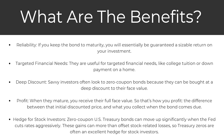So what are the benefits? Starting with reliability — if you keep the bond to maturity, you will essentially be guaranteed a sizable return on your investment. It's also good for targeted financial needs, such as college tuition or a down payment on a home. You also get a deep discount. Savvy investors often look for zero coupon bonds because they can be bought at a deep discount to their face value. When they mature, you receive their full face value — that's how you profit.